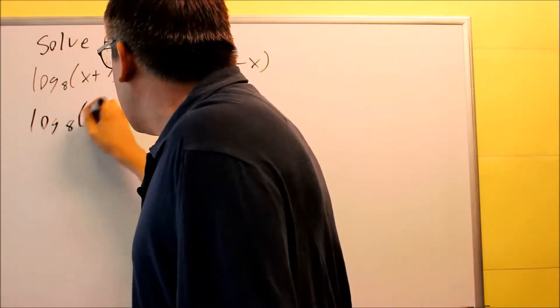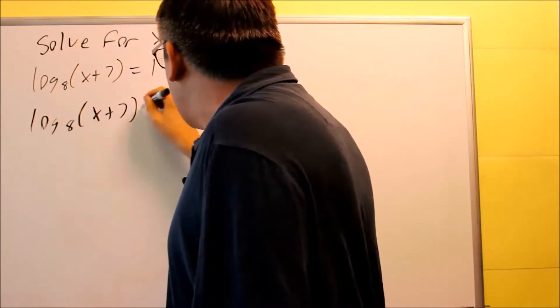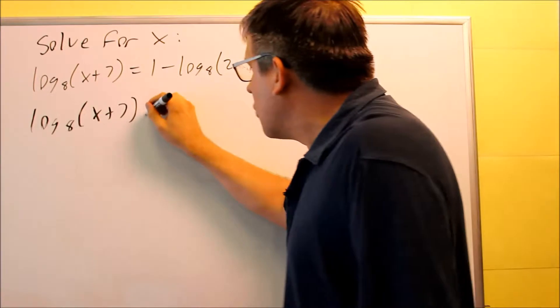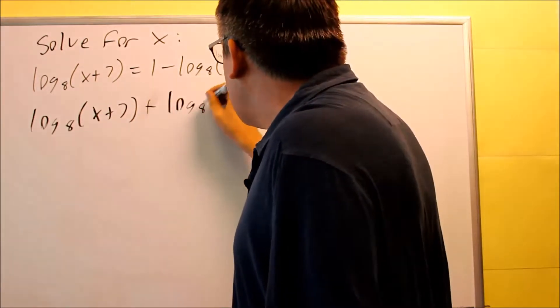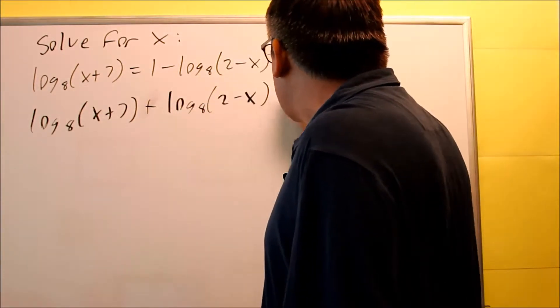Now I have log base 8 of x plus 7. We're going to add, so plus, log base 8 of 2 minus x, and that's going to equal 1.